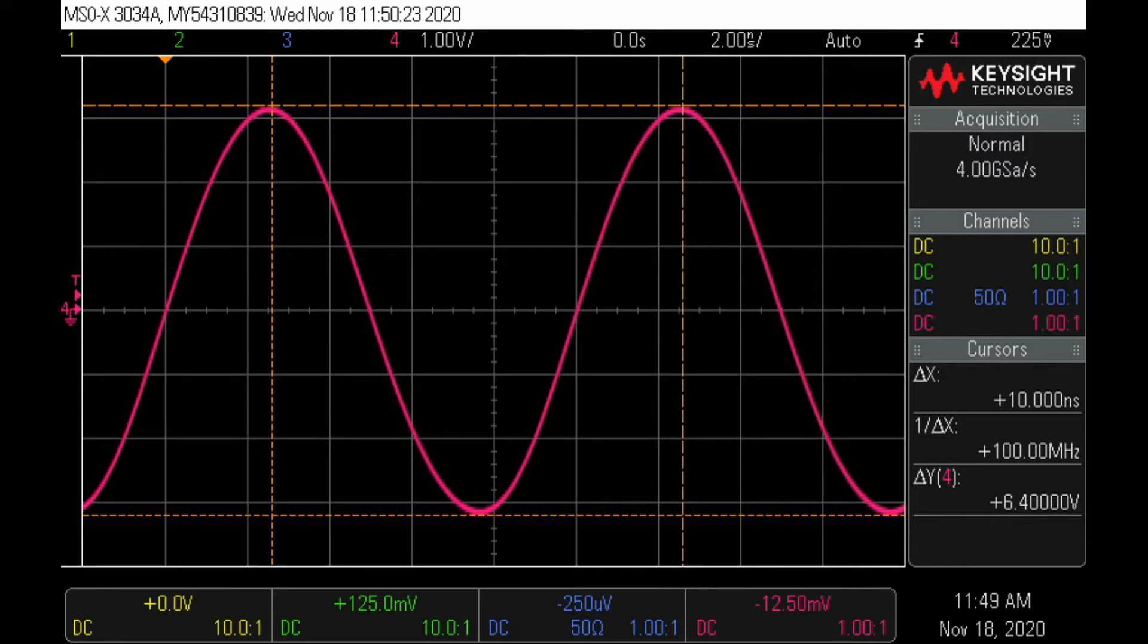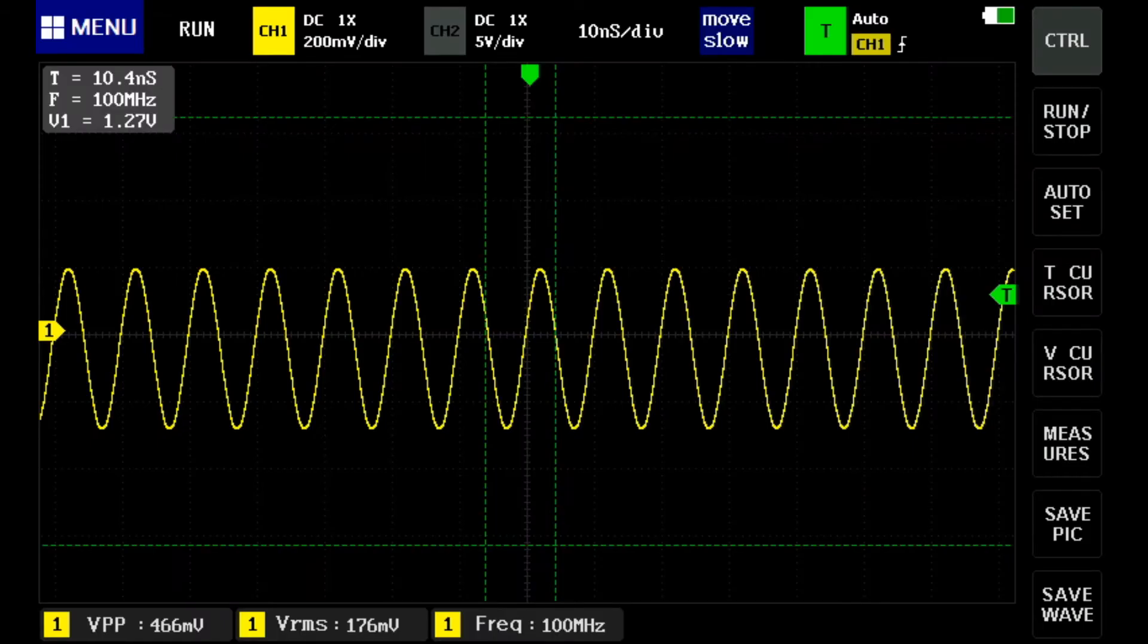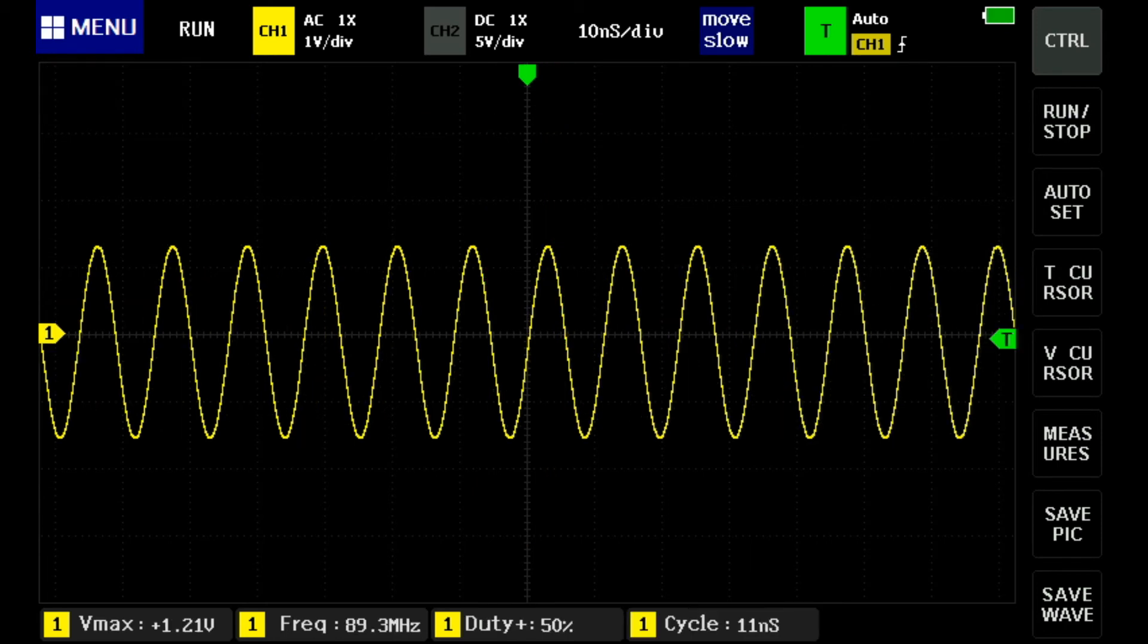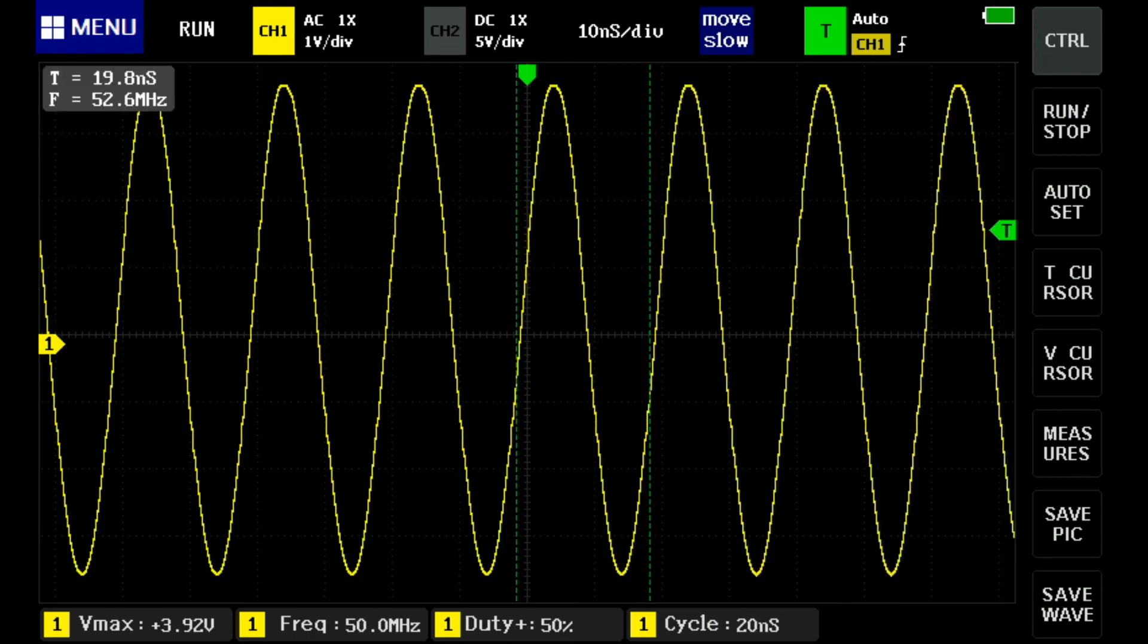So what we have here is the capture on the Keysight, the main scope of the 100 meg signal. And then here we see the 100 meg on the tablet, which is not bad. Then we see one here where it's 90 meg, you can see it gets a little bit bigger. And this is at 50 meg. Now that's pretty respectable, I would have said. That's not bad. 50 meg is a pretty good bandwidth. So there you go.